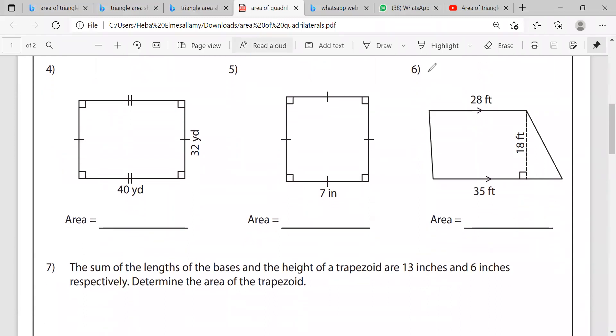Question four is here. Also, I have a rectangle. The area is length times width, which is 40 multiplied by 32. Get the answer in yards squared.